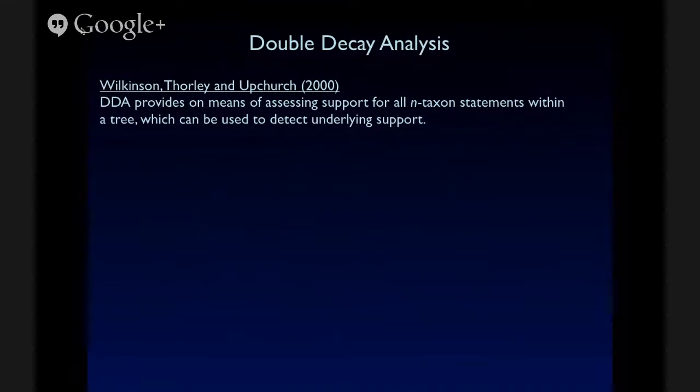And there are ways to get around this to a certain extent. Wilkinson and colleagues proposed a method called double decay analysis. And this provides a means of assessing support for all n-taxon statements within a tree. And this can help us detect underlying support. Basically, we take each permutation of taxa in the total tree and calculate support values for branches when we only include those in the analysis and let the others freely float around the phylogeny. And the actual output for a double decay analysis is a very large table with results for all these possible trees. That can be a little bit difficult to digest.